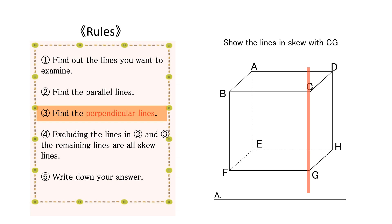Next, let's find the lines that are perpendicular to line CG. The four lines perpendicular to line CG are lines BC, CD, FG, and GH.